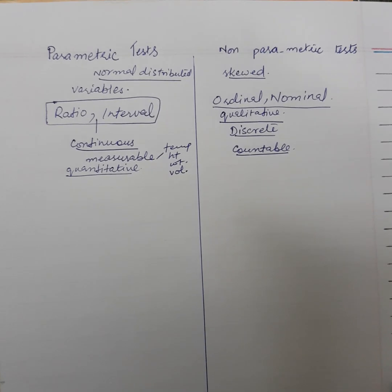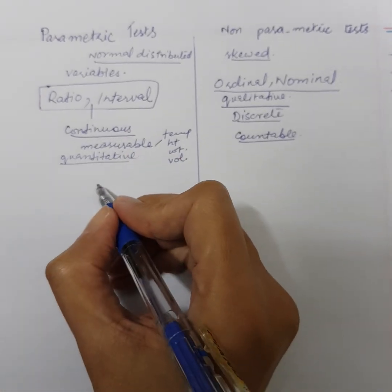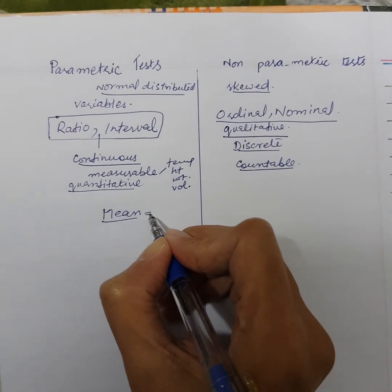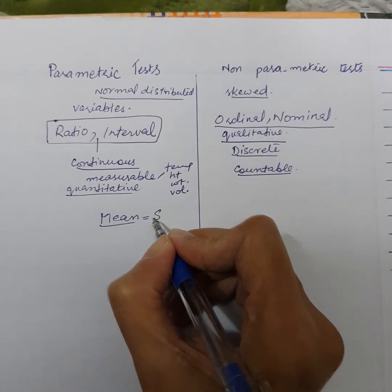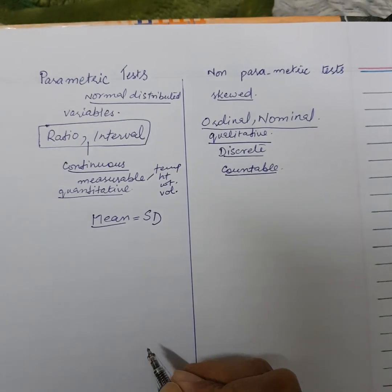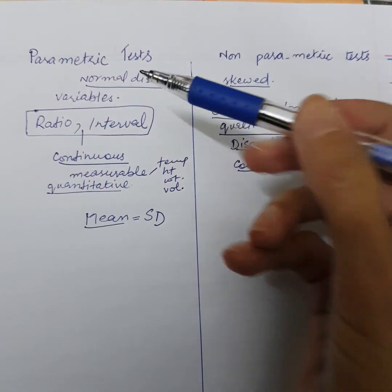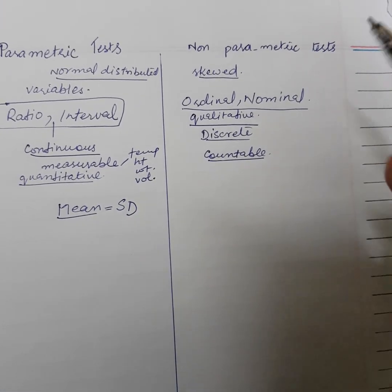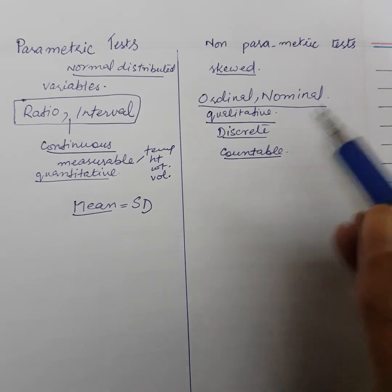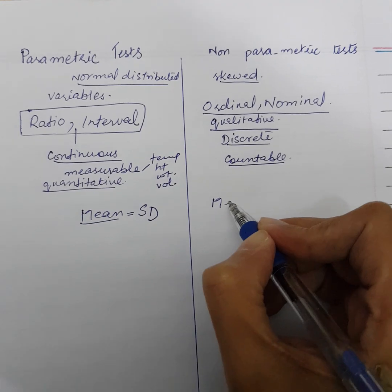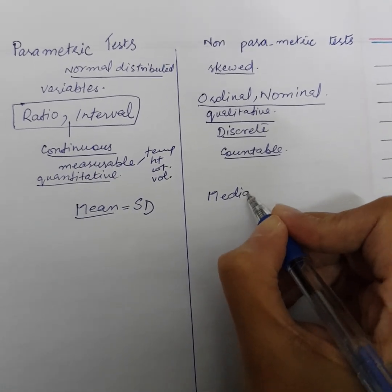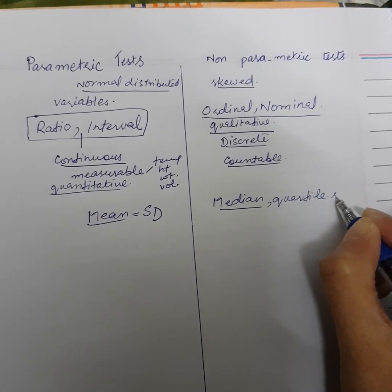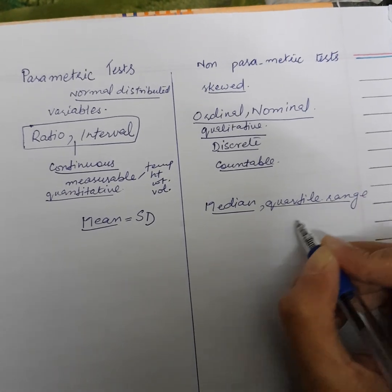Further, in parametric tests we will have mean, and from mean we can also calculate the standard deviation. So in parametric tests, our data will have mean and standard deviations. While in non-parametric tests, the data will have median, quartile range, and mode.